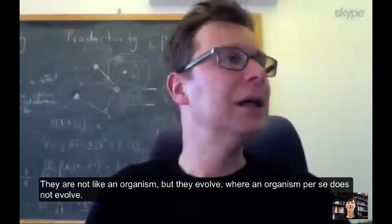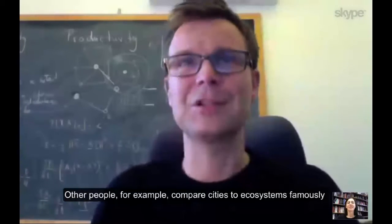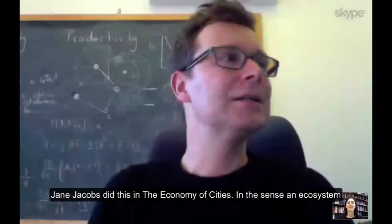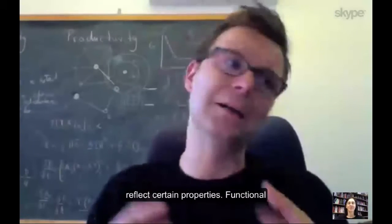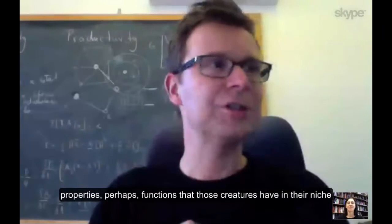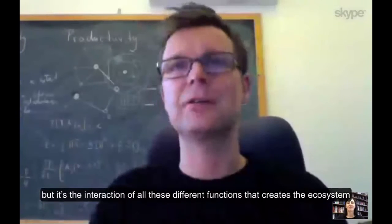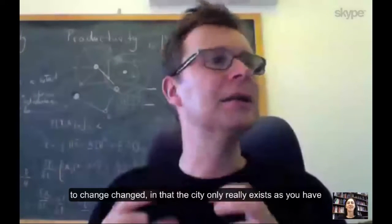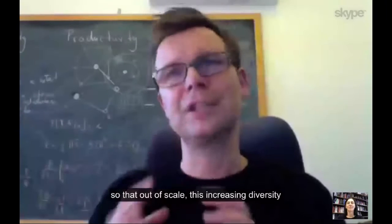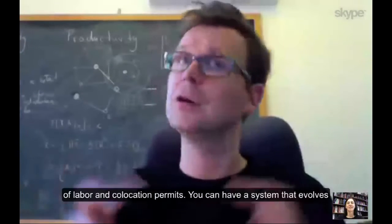Cities are not like an organism, but they evolve, whereas an organism per se does not evolve. Some compare cities to ecosystems — famously Jane Jacobs did this in 'The Economy of Cities' — in the sense that an ecosystem has organisms and species with certain functional properties, and it's the interaction of all these different functions that creates the ecosystem. In a city it's similar: the city only exists through division of labor, division of functions, and their integration back together, creating increasing diversity and productivity through co-location.